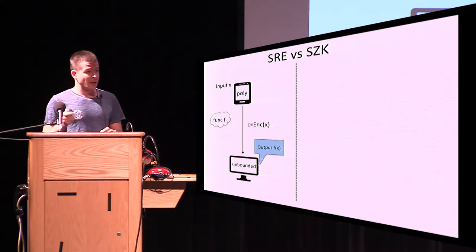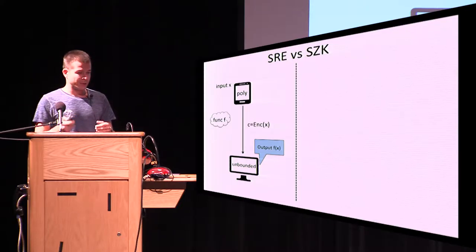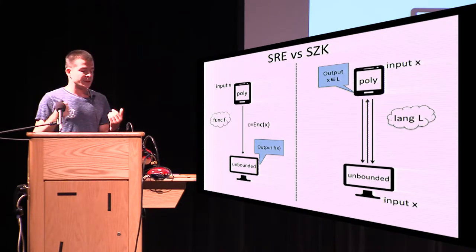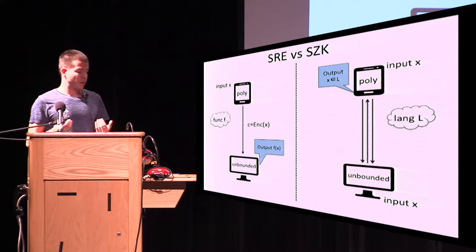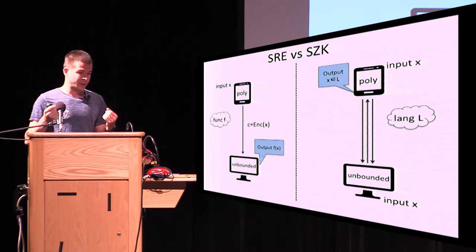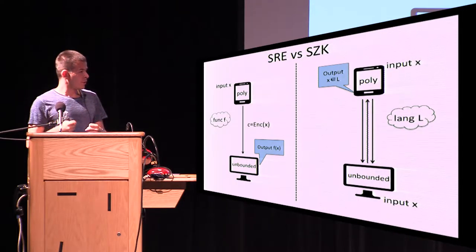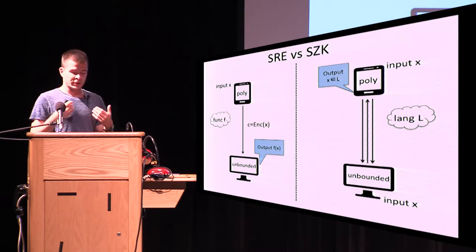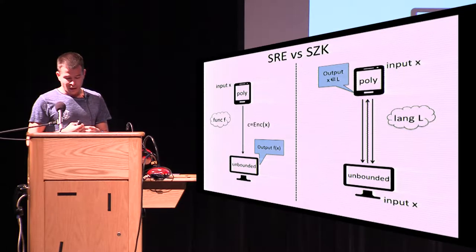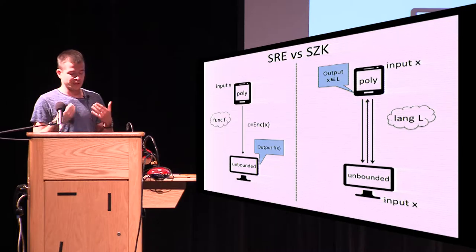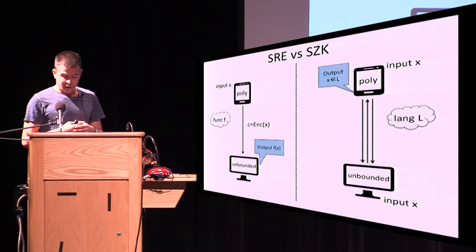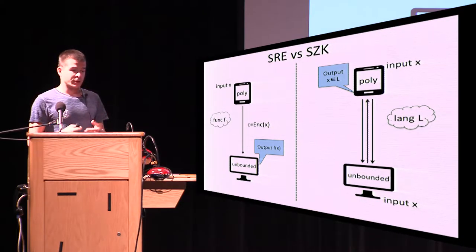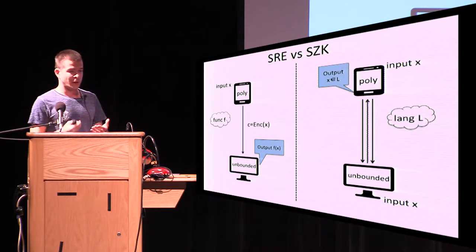The second complexity class is SZK, which people are probably more familiar with. We again have a computationally limited client and an unbounded server; both hold some input X and have some language in mind. The goal of the server is to convince the client that his input is indeed in the language, without the client learning anything about the input except whether the input is in the language or not. You can consider all languages that have such a statistical zero-knowledge proof system, and that is denoted SZK.